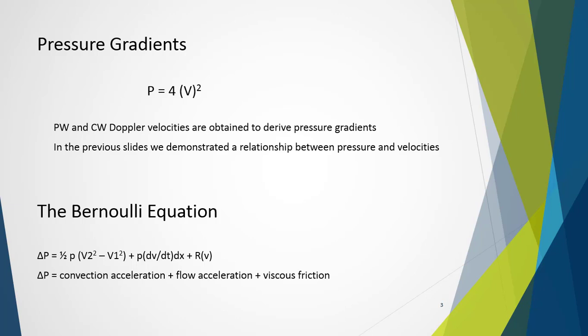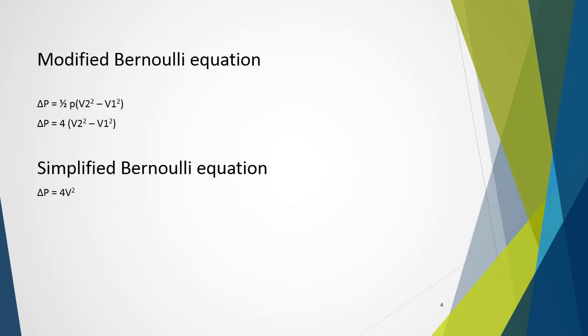Fortunately, this can be simplified. We're investigating peak flows, so flow acceleration is effectively non-existent at peak. Blood velocity and blood viscosity influence viscous friction, but these play a negligible effect when the orifice is greater than 0.25 cm² — essentially all cardiac applications — and thus can be ignored. This just leaves convective acceleration, giving us a much more manageable calculation. Considering the density of blood, the calculation becomes what you recognize here.